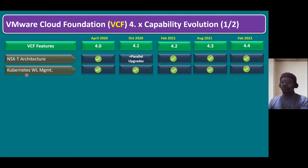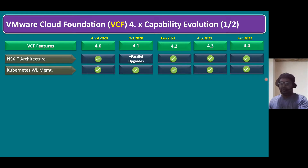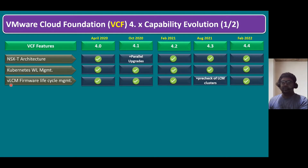Another feature is Kubernetes workload management. We have vSphere with Tanzu features, and Tanzu can also run on VCF. When running Tanzu on VCF, we can create Tanzu Kubernetes clusters. All Tanzu Kubernetes cluster VMs and vSphere pods can be managed from version 4.0 onwards. Additionally, VMware Lifecycle Manager firmware lifecycle management is also available from 4.0, with LCM cluster pre-checks added in version 4.3.